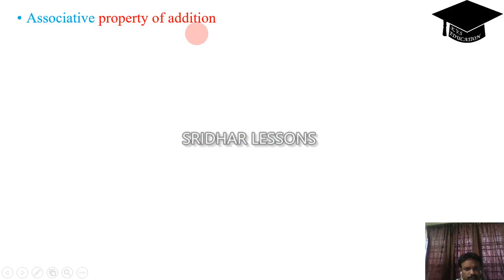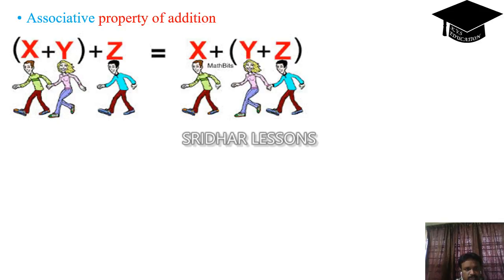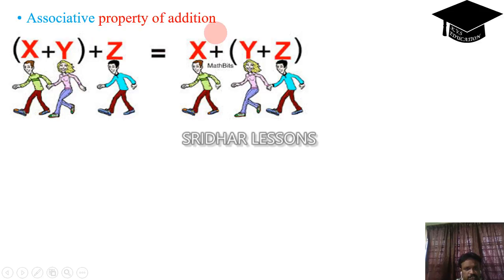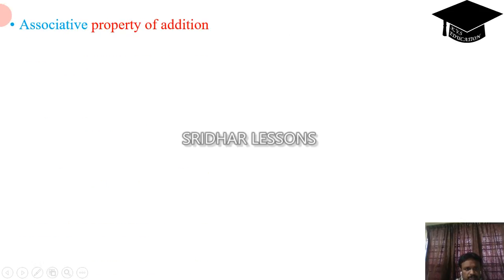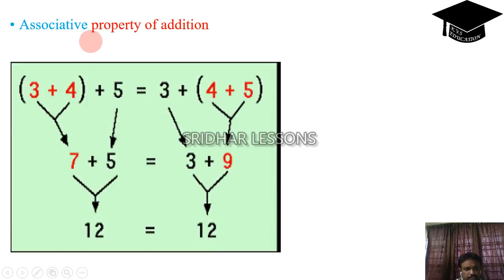Associative property of addition. See: (x plus y) plus z is equal to x plus (y plus z). Both are same. This property is known as the associative property of addition.